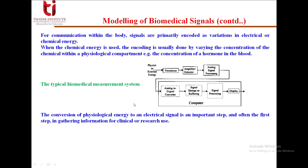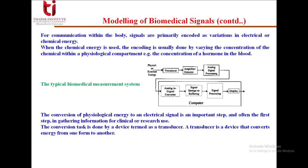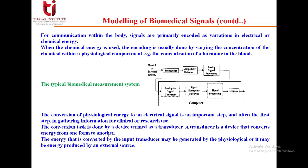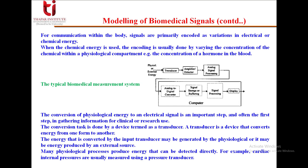The conversion of physiological energy to an electrical signal is an important and often the first step in gathering information for clinical or research use. This conversion is done by a transducer that converts energy from one form to another. For example, cardiac internal pressures are usually measured using a pressure transducer.